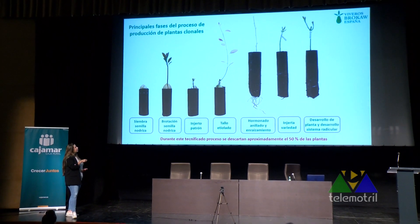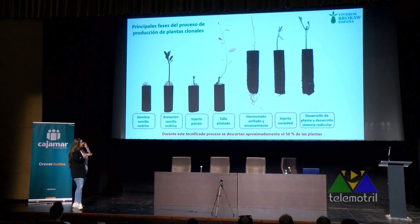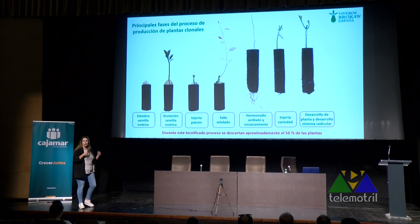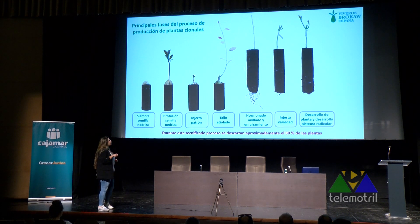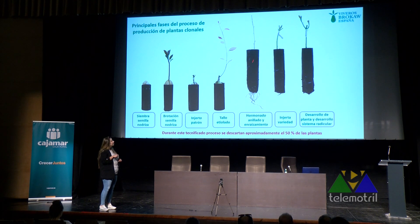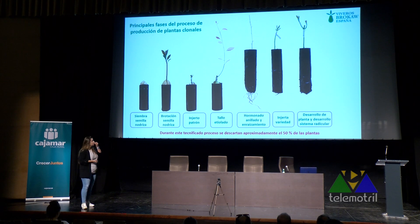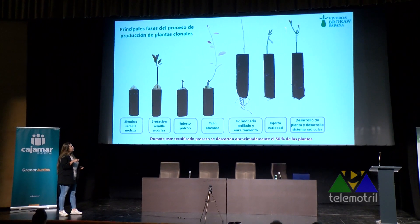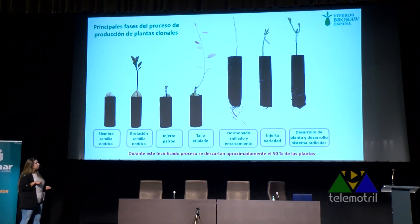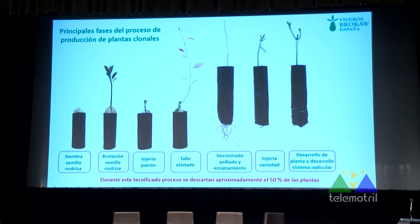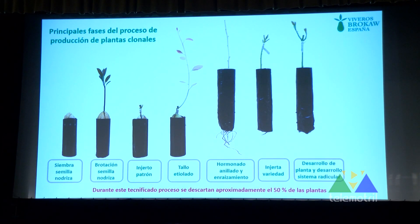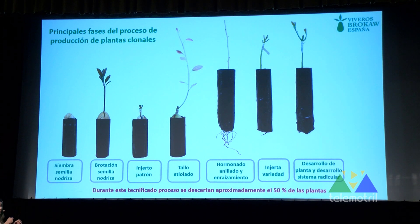Se pone la anilla, se aplican unas hormonas y empieza la planta a producir raíces y a desarrollarse. Aquí tenemos las raíces de la semilla original y ya se están creando las raíces nuevas. Seguidamente injertamos la variedad frutal —puede ser Hass, Bacon, Fuerte, un polinizador, tipo A o tipo B— y la planta ya empieza a desarrollarse. Conforme van pasando los meses, la anilla corta y estrangula la semilla.